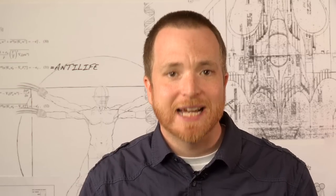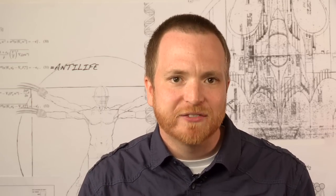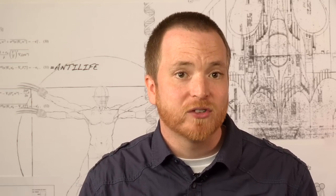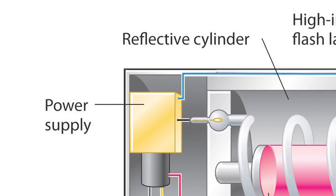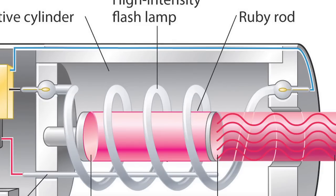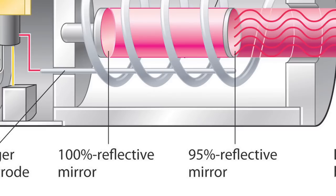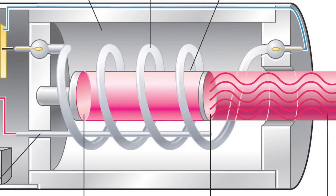A laser is simply light, light of a particular wavelength that is synchronized and focused in a single direction. To produce a laser, energy is used to excite the atoms of a gas, liquid, or solid. When the electrons of the atoms settle, they release photons. These photons ricochet off of mirrors and are directed into a laser beam.